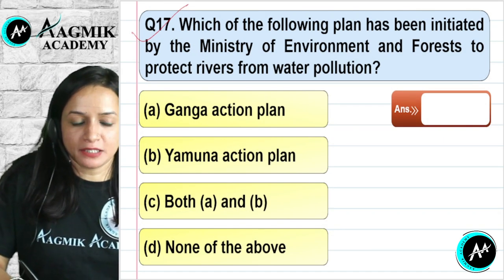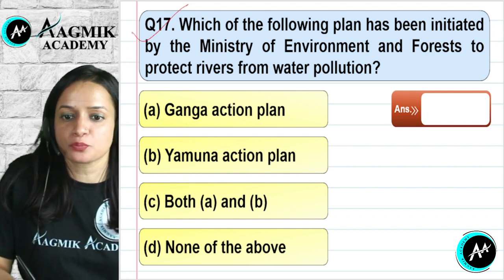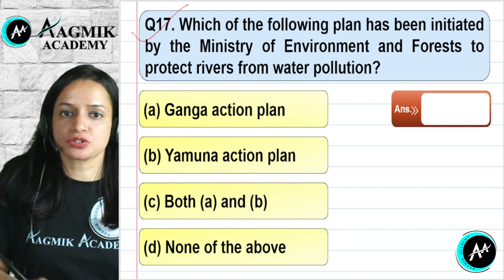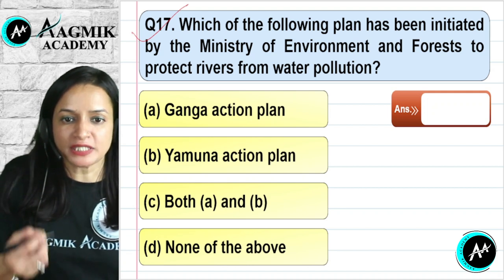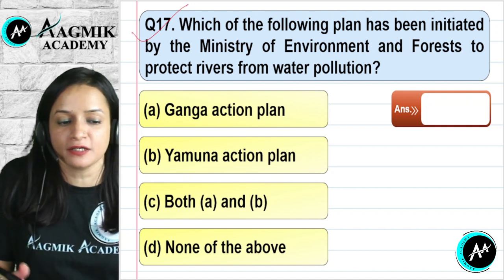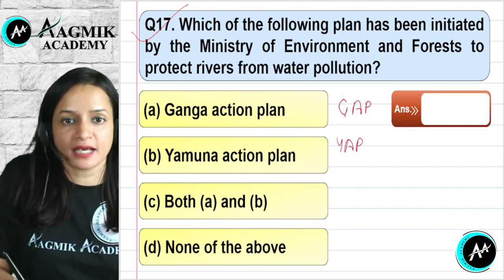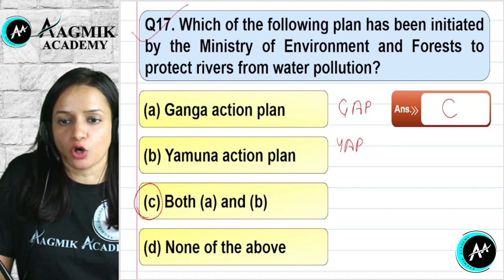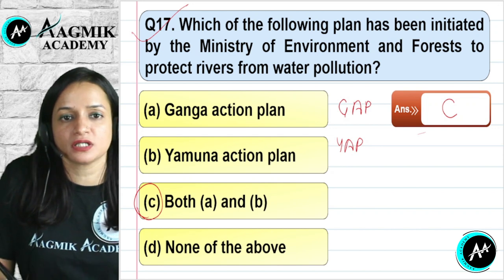Question number 17: Which plan was initiated by the Ministry of Environment and Forest to protect rivers from water pollution? The two main rivers focused on were Ganga and Yamuna, with the Ganga Action Plan (GAP) and the Yamuna Action Plan (YAP). Both programs were initiated to protect the rivers. The correct option is C.